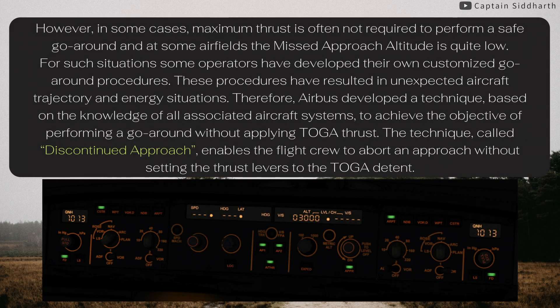However, in some cases, maximum thrust is often not required to perform a safe go-around, and at some airfields the missed approach altitude is quite low. For such situations, some operators have developed their own customized go-around procedures. These procedures have resulted in unexpected aircraft trajectory and energy situations. Therefore, Airbus developed a technique, based on the knowledge of all associated aircraft systems, to achieve the objective of performing a go-around without applying TOGA thrust.